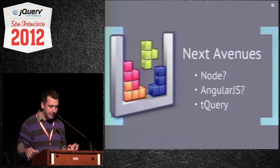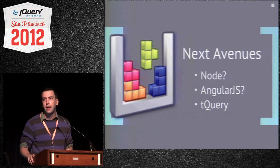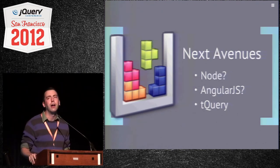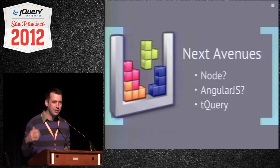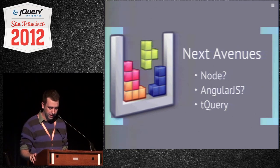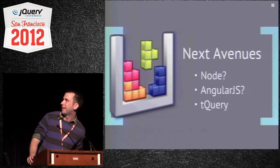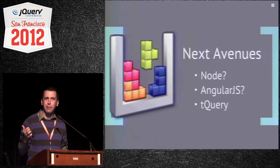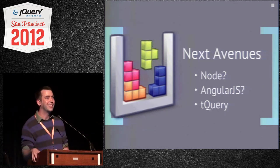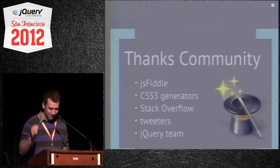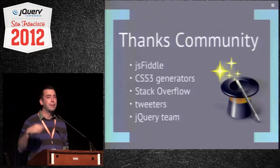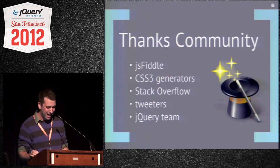Now that we've done this first example and it works and it's making money, here's the next stuff I want to learn. If anybody wants to do a project, I'm right here. I wanted to thank the community who has helped so much — JS Fiddle is fantastic (I wish jQuery was selected by default instead of MooTools), there are a lot of CSS3 generators which not only save time but taught me a lot, Stack Overflow obviously, and there are a lot of people I follow on Twitter. The jQuery team has also been pretty helpful.